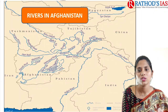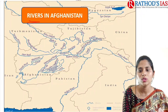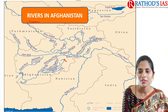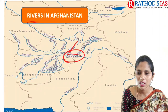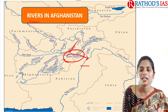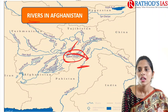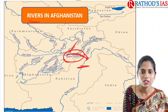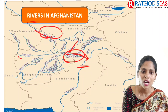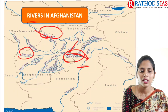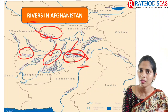Now let us try to focus on important rivers in Afghanistan. The first important river is the Kabul River, which originates from the Hindukush mountains in Afghanistan and joins the Indus River in Pakistan. We also have the Amudarya River, which flows mainly into Turkmenistan, the Harirud River, and the Helmand River.